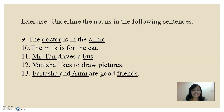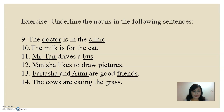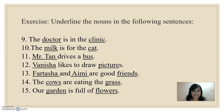Very good. Thirteen: Patasha, Aimee, and friends. Fourteen: cows and grass. And lastly, fifteen: garden and flowers.